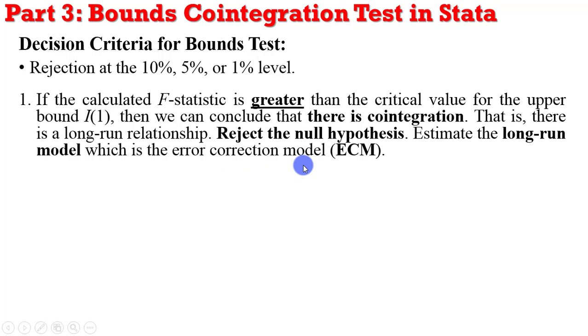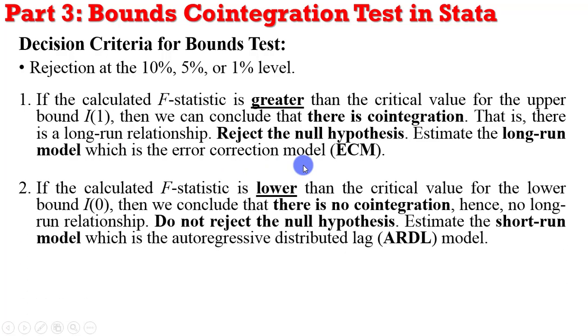If the F value is lower than the critical value for the lower bound, we conclude in this case that there is no cointegration, there is no long-run relationship. In that case, we cannot reject the null hypothesis and we can only estimate the short-run model.